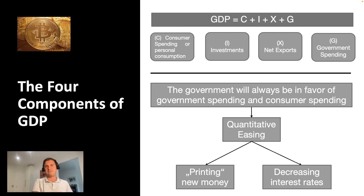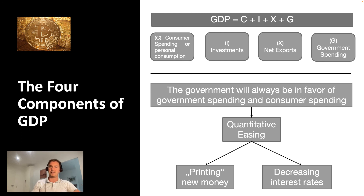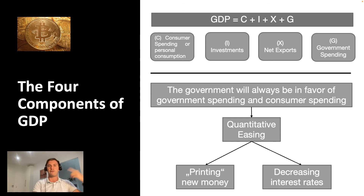We have defective fiat money where governments and central banks can print new money — the situation will not get better. To improve, we need money that cannot be printed and does not devalue over time. We had gold for centuries, but gold was replaced by paper money because of poor portability and divisibility. But now we have Bitcoin, which is the best form of money we have ever had — with a supply cap of 21 million and programmed scarcity.